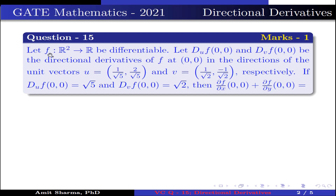The question is: let f from ℝ² to ℝ be differentiable. Let D_u f(0,0) and D_v f(0,0) be the directional derivatives of f at (0,0) in the direction of unit vectors u = (1/√5, 2/√5) and v = (1/√2, -1/√2) respectively. If D_u f(0,0) = √5 and D_v f(0,0) = √2, then ∂f/∂x(0,0) + ∂f/∂y(0,0) is equal to?